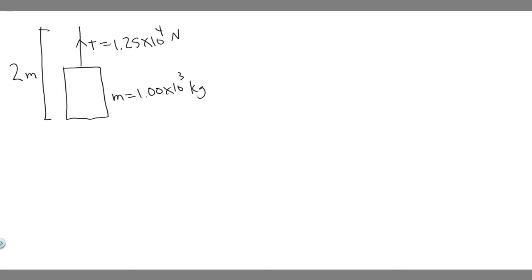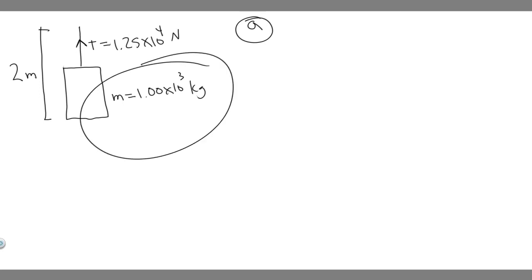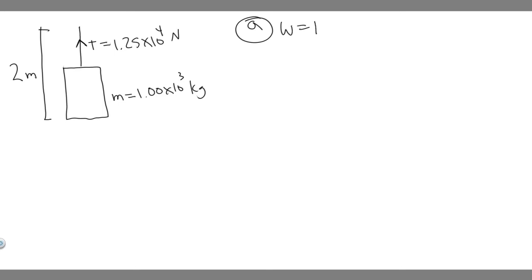So we're basically trying to find two different works. For Part A, we're trying to find the work done by the tension force on the elevator. I went ahead and drew what was going on — we have this elevator, the tension force in the cable is 1.25 times 10 to the 4th newtons, the mass is 1.0 times 10 to the 3 kilograms, and we know the distance it's going to be traveling. The formula for work is: work equals force times distance times the cosine of theta.